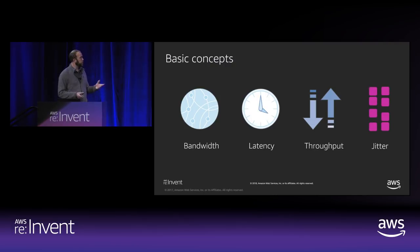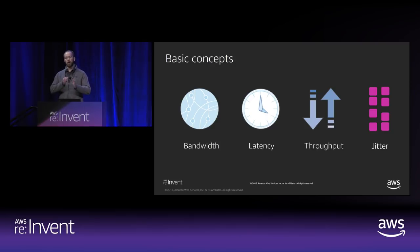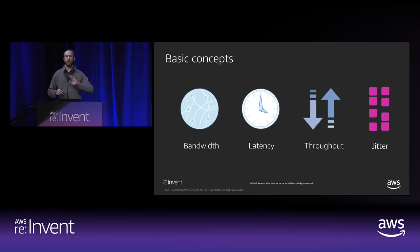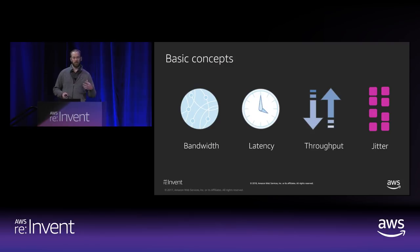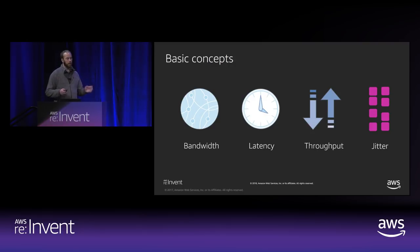Jitter is the inter-arrival packet delay variation. If I send you a packet every 20 milliseconds and one comes in 15 milliseconds instead of 20, you just experienced jitter. We didn't lose any packets, but that packet came in at a different time than expected. This matters with things like voice-over-IP and real-time video applications where buffering means a late packet can be equivalent to losing it.